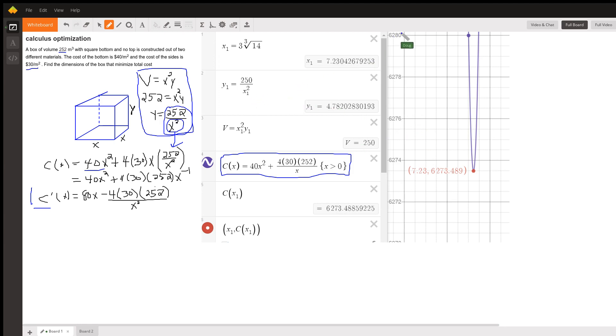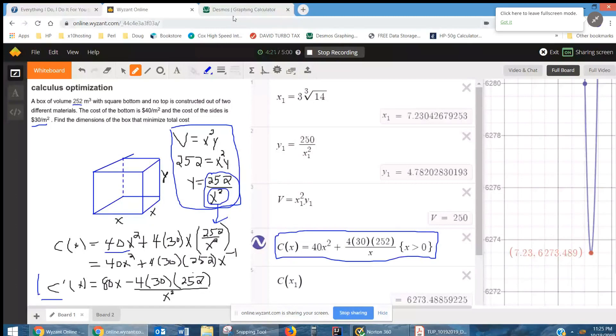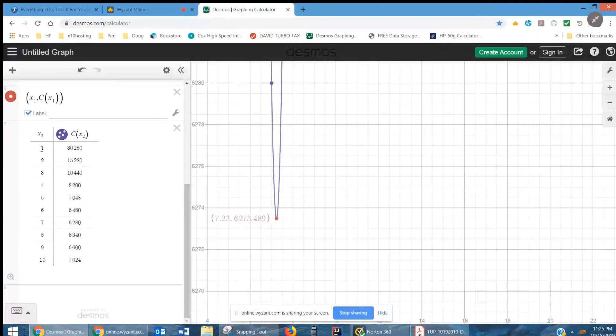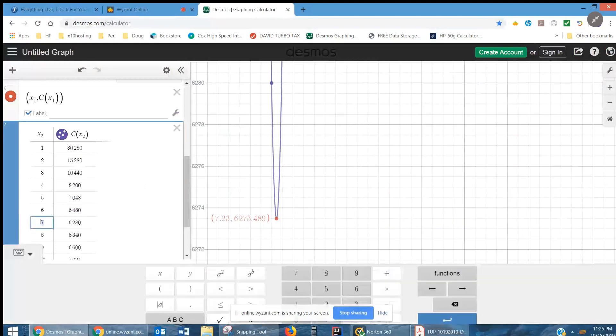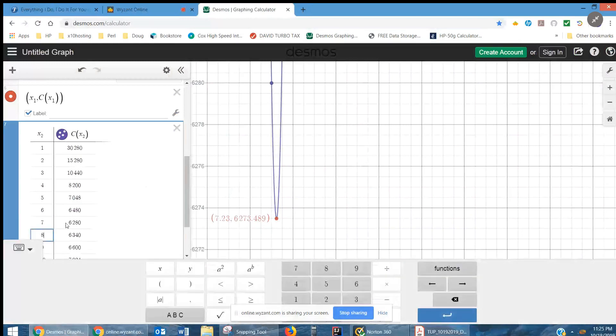And if I go to Desmos, just so you can see what happens if I create a table, you can see that if I let the side of the box be 1, that the cost would be pretty exorbitant. 2, 3, 4, 5, 6, 7, between 7 and 8 seems to be the value that we're looking for. And it turns out it is 7.23, as shown over here.